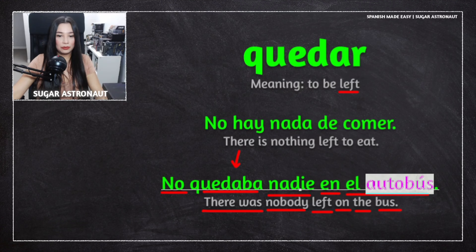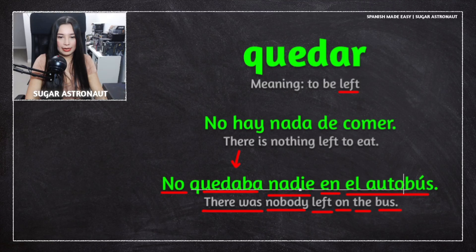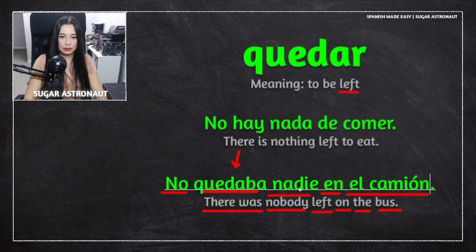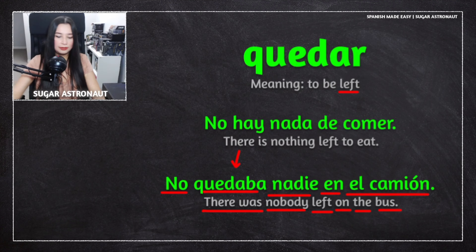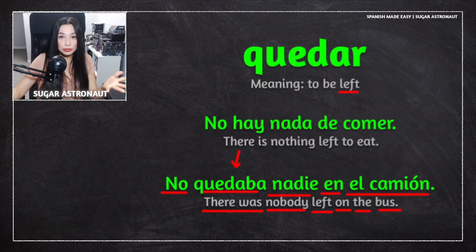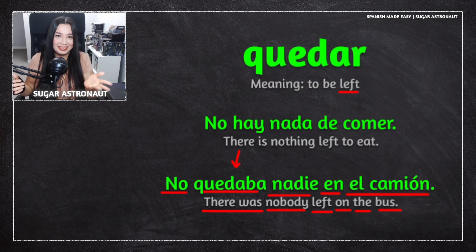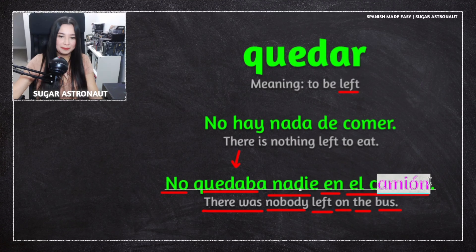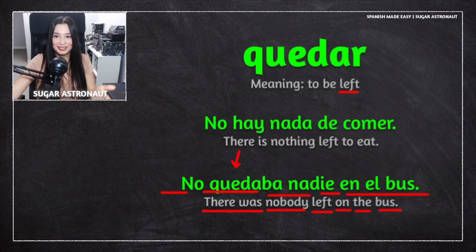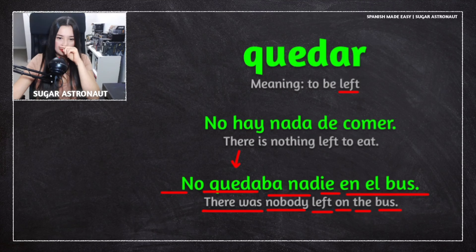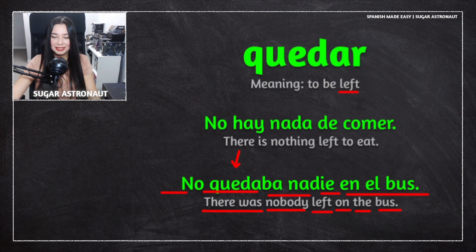There are different ways to say 'bus' in Spanish. Some people say 'autobús,' others just say 'bus.' Another word is 'camión,' used in Mexico. In certain parts of the Caribbean, people say 'la guagua' — that's a really interesting one. So there are at least three regional words for bus.